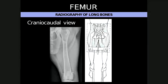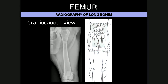For the craniocaudal view of the femur, the patient is placed in dorsal recumbency and the limb of interest is extended cranially with the femur pronated slightly so that the patella is situated in the center over the distal femur. One needs to collimate to include the coxofemoral joint and the stifle joint. Positioning bands and ropes allow the patient to be positioned without anyone needing to hold the dog.